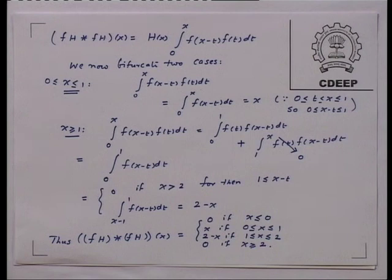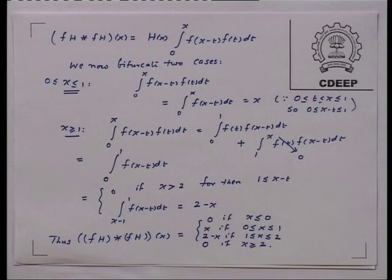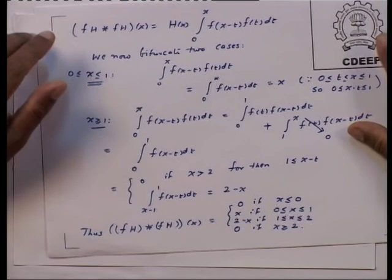The convolution of f·h with itself is therefore: 0 when x is less than or equal to 0, x between 0 and 1, (2 minus x) between 1 and 2, and 0 beyond. The graph is a triangle — 0 outside of [0,2] and a nice symmetrical triangle between 0 and 2. We will stop here today and continue tomorrow with Laplace transforms in the fourth session. Tomorrow we will state and prove the convolution theorem and see applications to ODEs, initial value problems, integral equations of convolution type, Abel's integral equation, and the tautochrone property of a cycloid.